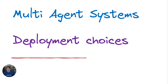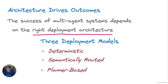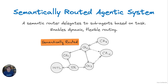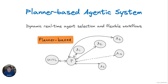With this introduction to foundational concepts, let's look at some of the multi-agent deployment choices. Understanding these options will help software developers design systems that can be either more deterministic or more dynamic based on the problem space they're working on. The first deployment choice is a deterministic agentic system, which involves fixed workflows with carefully curated agents ensuring predictability in outcomes. The second is a semantically routed agentic system, which utilizes a semantic router to assign tasks to sub-agents based on user query. The third approach is a planner-based agentic system, involving dynamic and real-time selection of agents and flexible management of workflows.